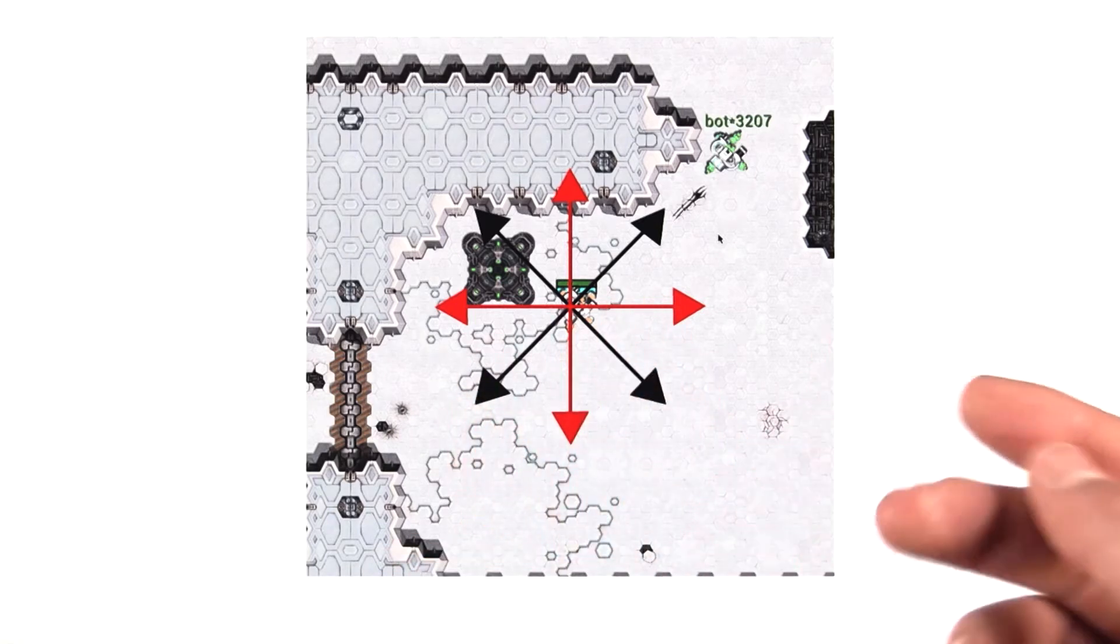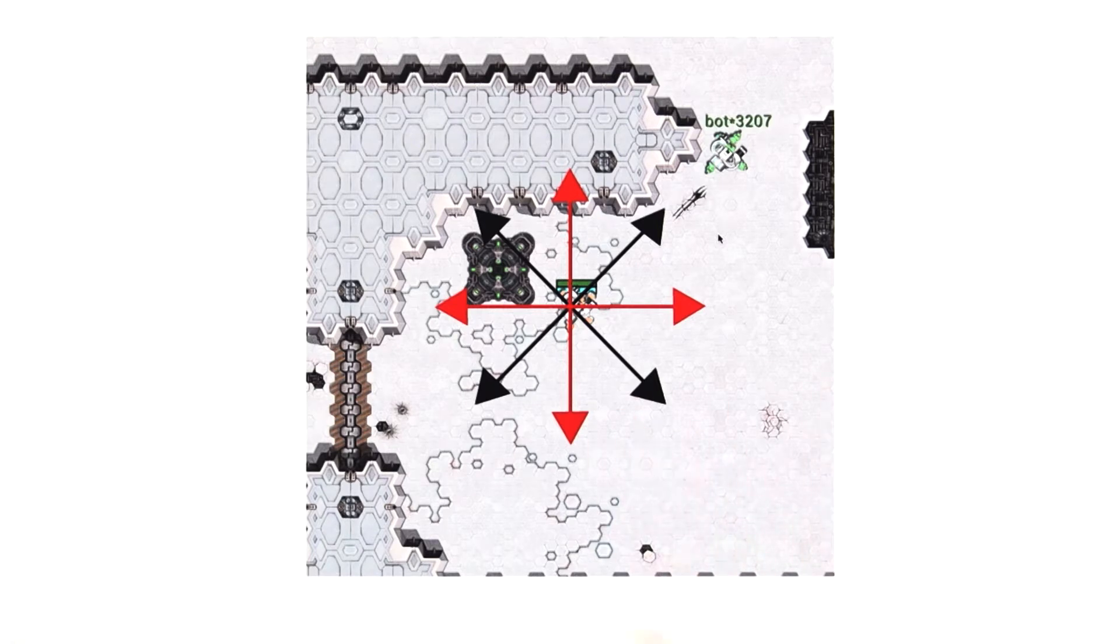With this, players using mice as an input would get an unfair advantage. As you can see where the cursor is here, a mouse player would be able to shoot in a direction and at an angle that keyboard players wouldn't be able to use.